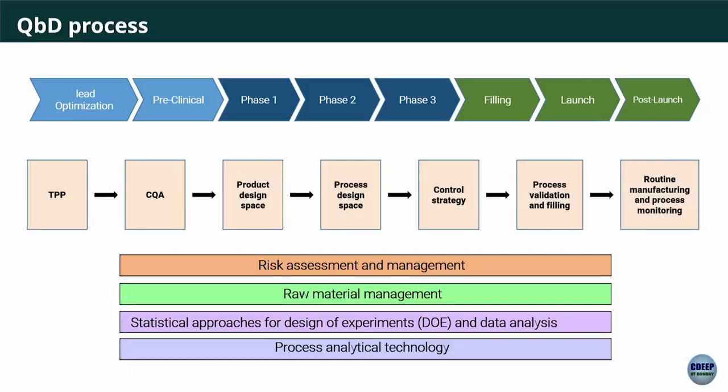QBD — Quality by Design — is an FDA term. Before you start developing a drug, you design it on paper first. For example, if making insulin, you specify the amino acid sequence, that it will be expressed in E. coli, and so on. All of this planning is written in a document called the Target Product Profile, or TPP — a description of the requirements for what the drug has to be.